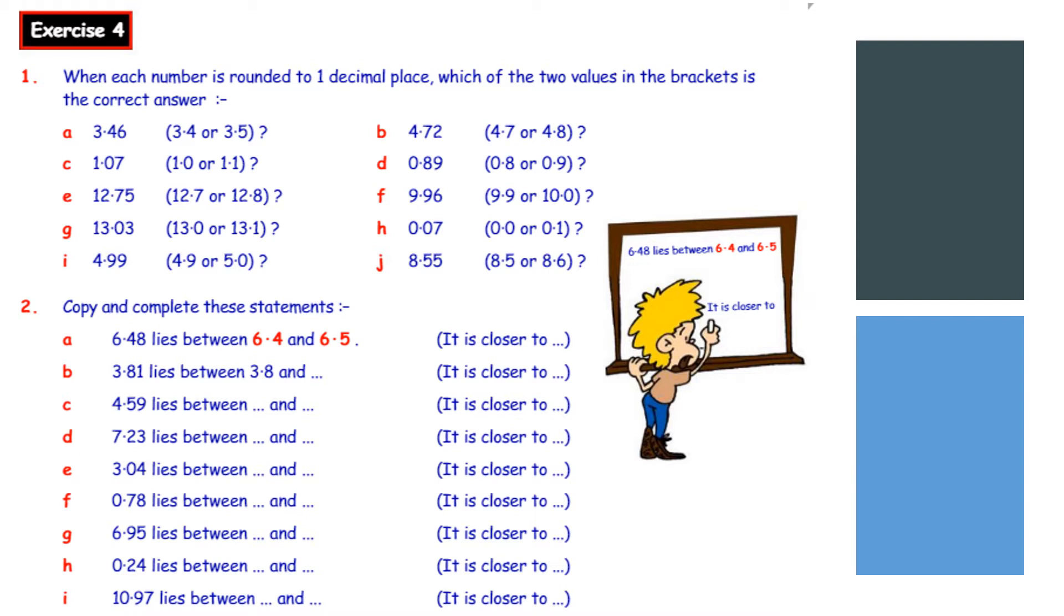Okay, so number one here. This is something we've done already, but rounding to the nearest whole number, here we're rounding to the first decimal place. So we've got 3.46 and we're asked is it 3.4 or 3.5. It's the six, the number in the second decimal place, that we're looking at. The six tells us we're rounding up, which would take us to 3.5.